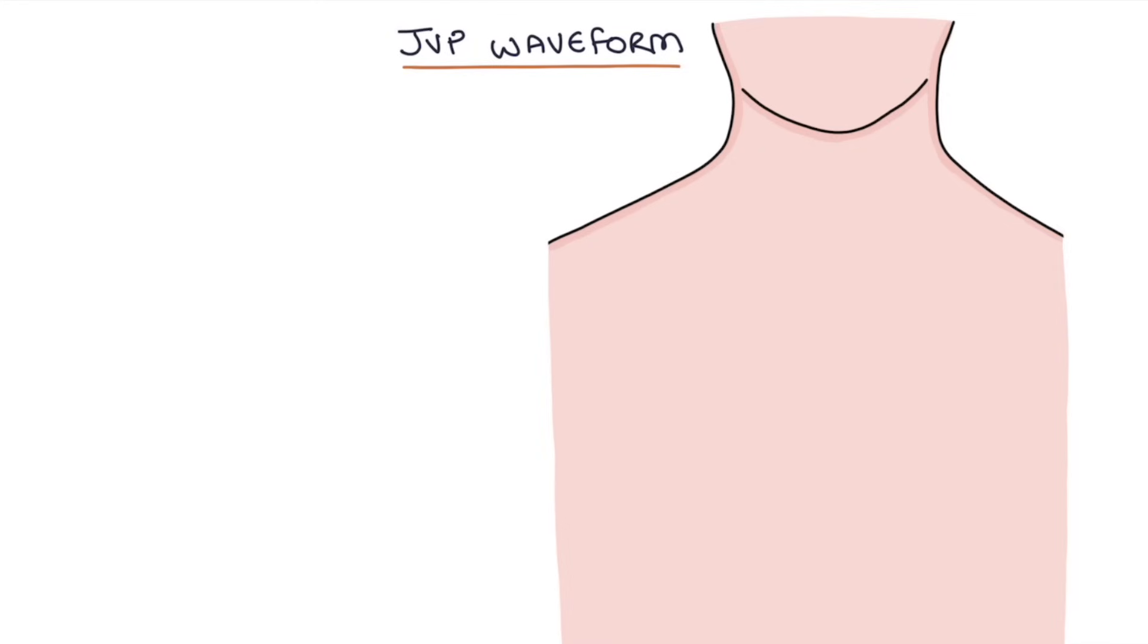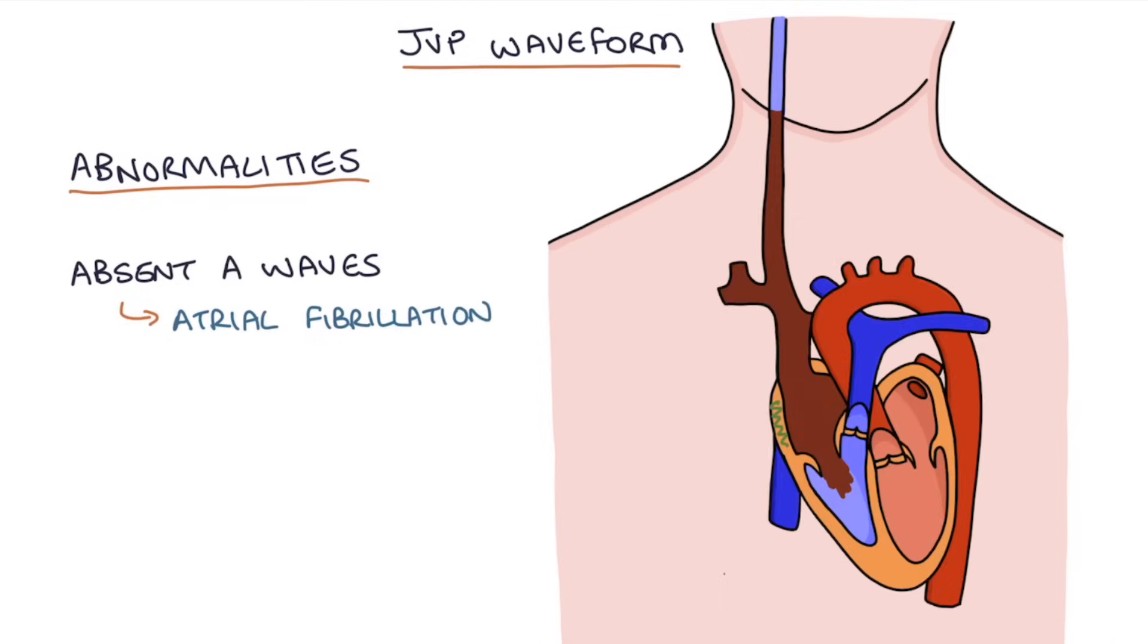Finally, I want to go through some simple abnormalities that you might see with a JVP. A waves will disappear with atrial fibrillation because the right atrium is not contracting in a coordinated way. Remember that the coordinated atrial contraction is what causes the A waves, so this makes a lot of sense.